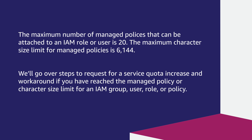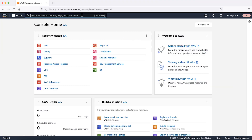Let's begin with steps to request a service quota increase. To increase the default limit from 10 to the maximum of 20, follow these steps. After logging into the AWS Management Console, change the region to US East 1 or Northern Virginia.